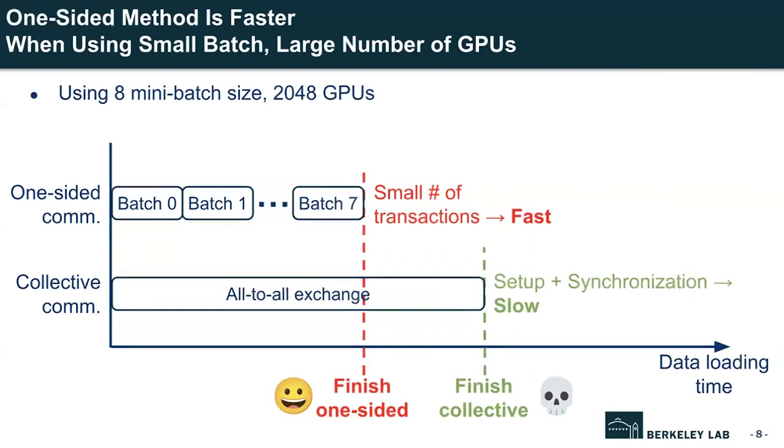In the opposite scenario — small mini-batch size and large number of GPUs — one-sided communication requires only a few transactions, finishing data loading much earlier. However, with collective communication, using too many GPUs generates preparation overhead before communication starts, plus synchronization overhead. Therefore, one-sided communication is much better than collective communication in this case.